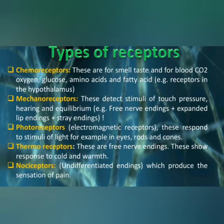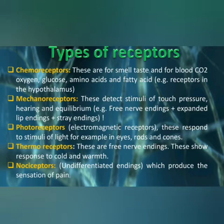Some receptors receive chemical stimuli. The hypothalamus also has receptors which detect oxygen levels, and receptors in the brain detect molecules of glucose, amino acids, and fatty acids.